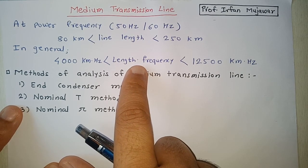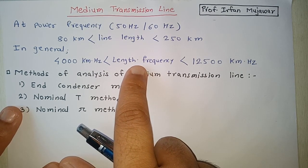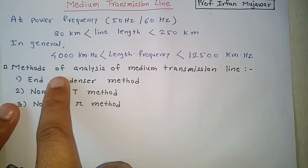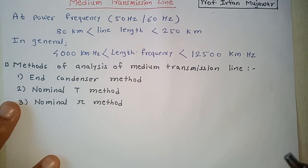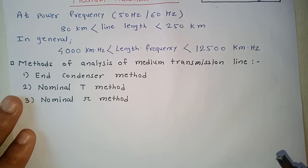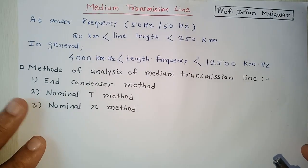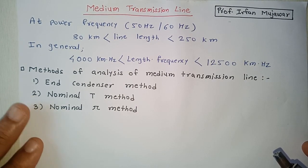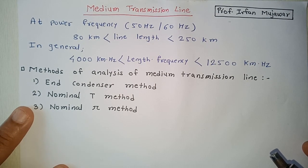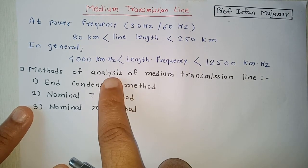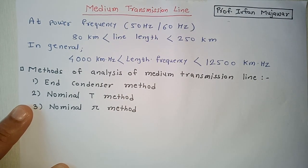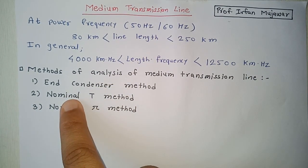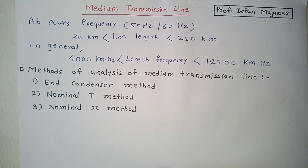We must consider both frequency and line length to judge whether a line is short, medium, or long. There are three ways to analyze the medium transmission line: first is the end condenser method, second is the nominal T method, and third is the nominal pi method.